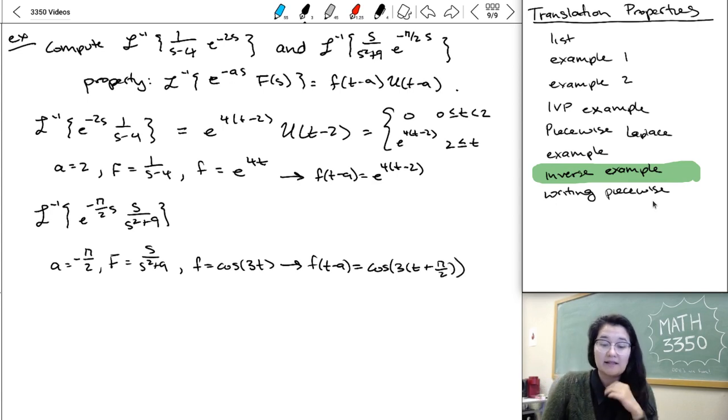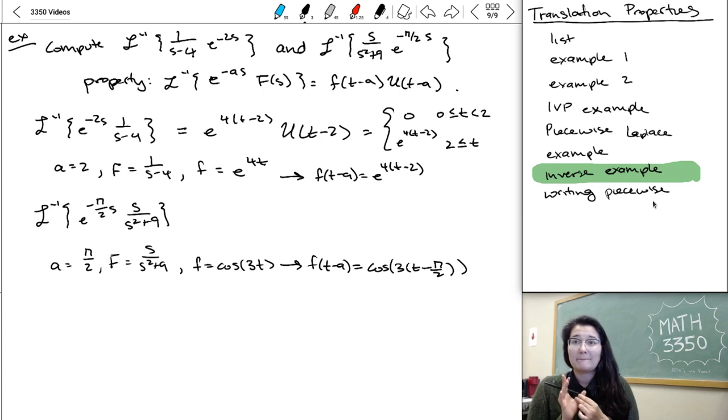Oh, nope. Sorry. It is T minus pi over two. When I first wrote down my A, I wrote it down wrong. It's E to minus A S so A is just pi over two. Sorry about that.